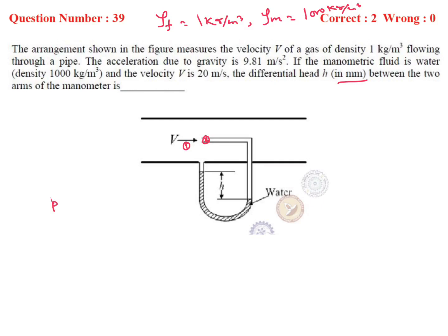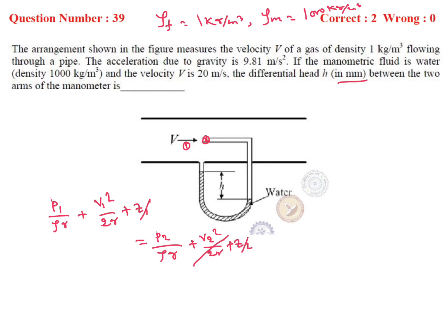P1/(ρg) + V1²/(2g) + Z1 = P2/(ρg) + V2²/(2g) + Z2. The datum terms cancel and V2 at stagnation is zero. Rearranging: V1²/(2g) = (P2 − P1)/(ρg). So V1 = √(2g × (P2−P1)/(ρg)), which can be written as V1 = √(2gH), where H is the head of gas.